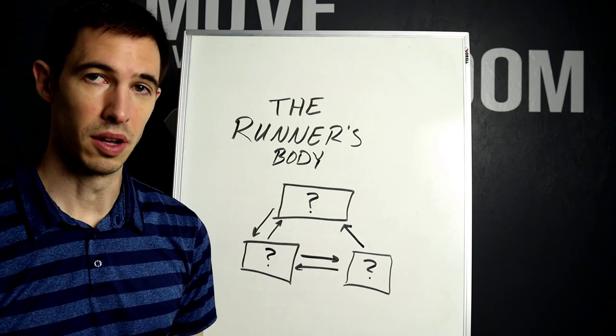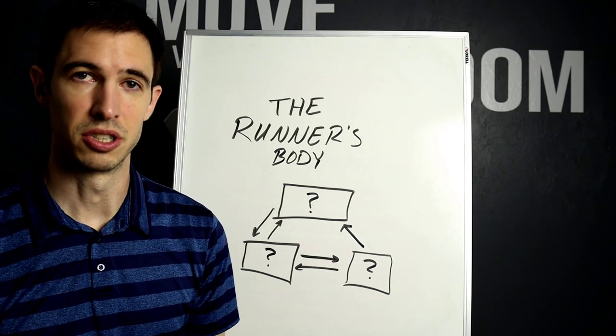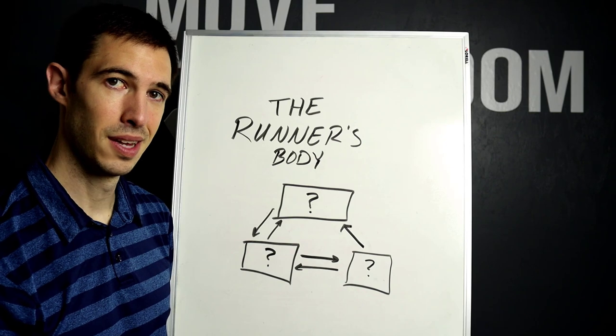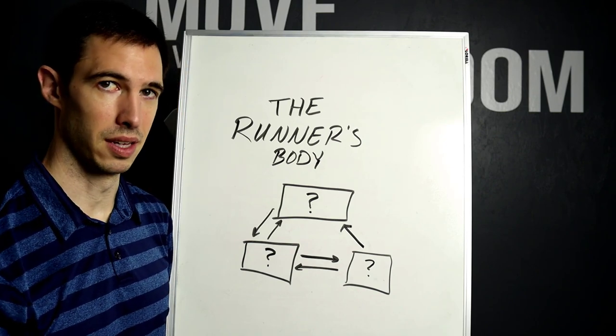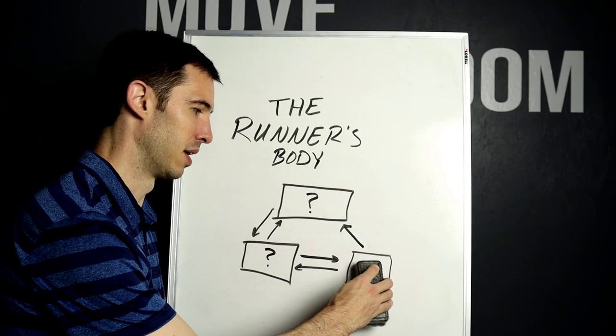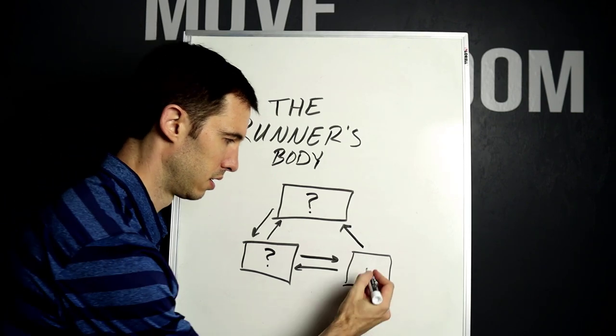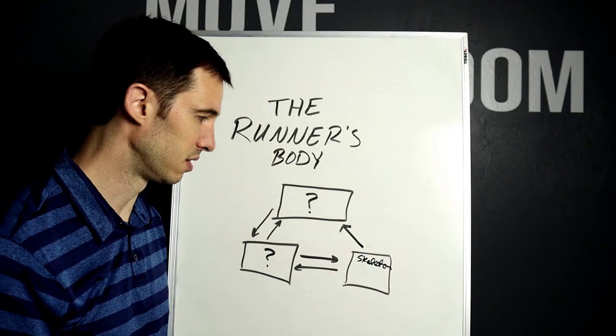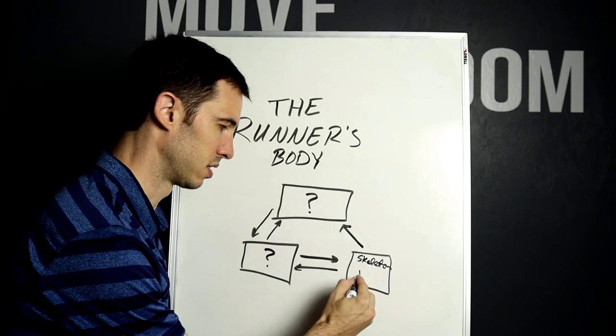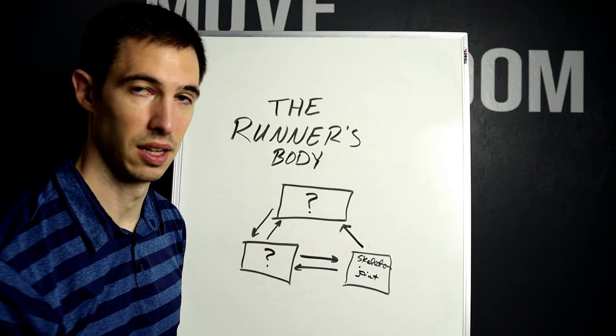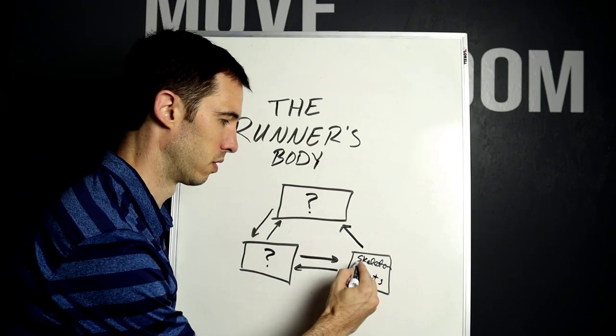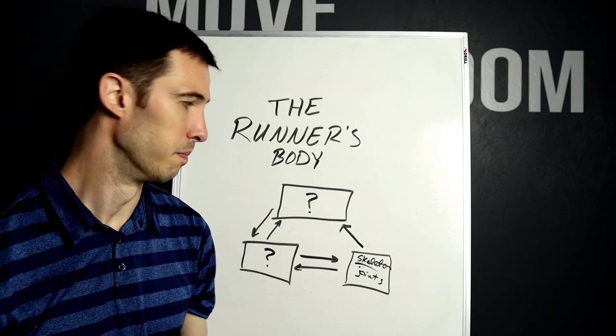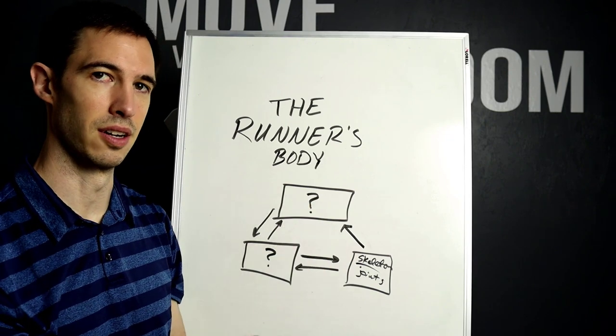What we're going to start with first is what makes up the structure of the body. The first thing we need to think about is the actual skeletal system and the bones that make up the entire body and the joints that make up the entire body. So right here I'm going to put in the skeleton, your skeletal system, as well as joints, because the joints are what allow for the skeleton and everything to move. You can't just have a bunch of bones that are all fused together. So we include the joints in here as well.